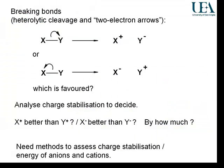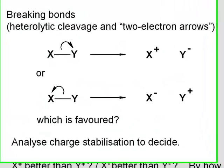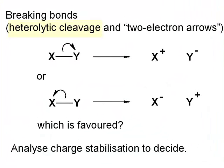This is our first example, referred to as heterolytic cleavage. 'Hetero' means different and 'lysis' means cutting. Heterolytic cleavage is cutting the molecule up into two different forms — in this case, an anion form and a cation form.